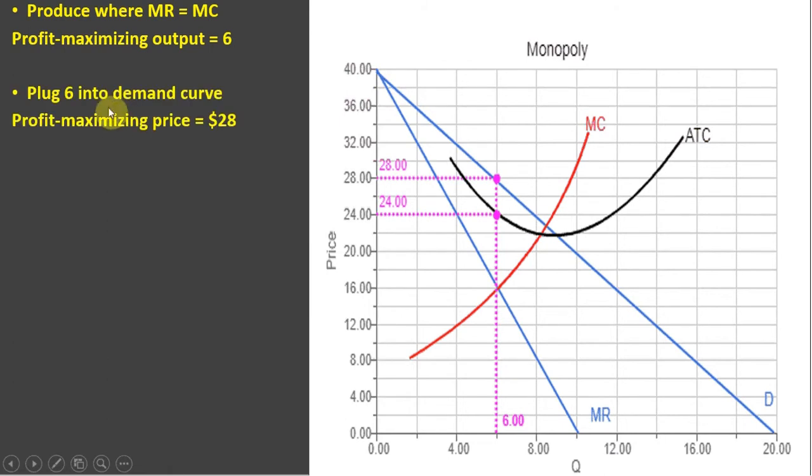The next step is we want to find the profit-maximizing price. To do that, take the 6 and walk it all the way up vertically until it touches the demand curve. And we come across and we see the profit-maximizing price is $28.